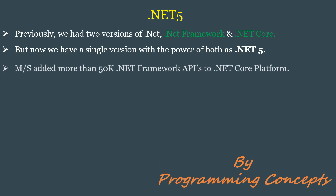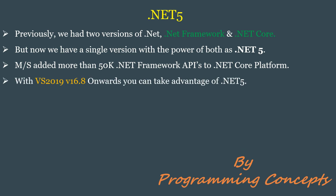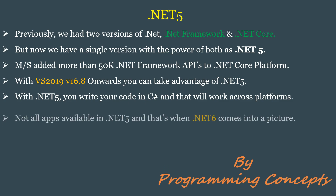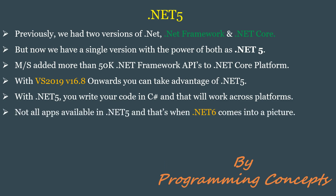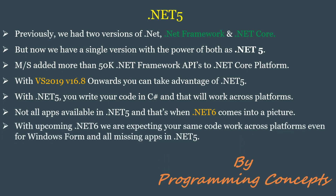Microsoft added more than 50,000 .NET Framework APIs to the .NET Core platform. With Visual Studio 2019 version 16.8 onwards, you can take advantage of .NET 5. With .NET 5, you can write your code in C# and it will work across platforms — that's the big thing. Not all apps are available in .NET 5, and that's when .NET 6 comes into the picture. With the upcoming .NET 6, we are expecting your same code to work across platforms even for Windows Forms and all missing apps from .NET 5.